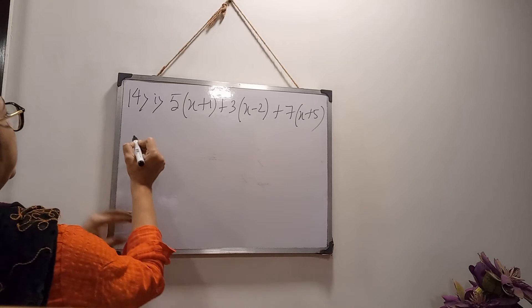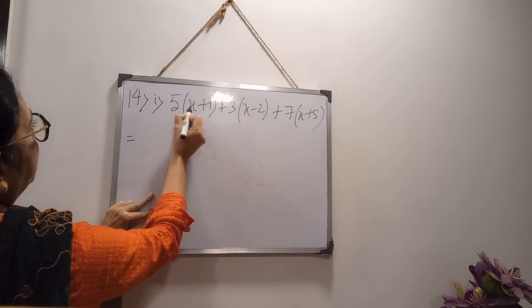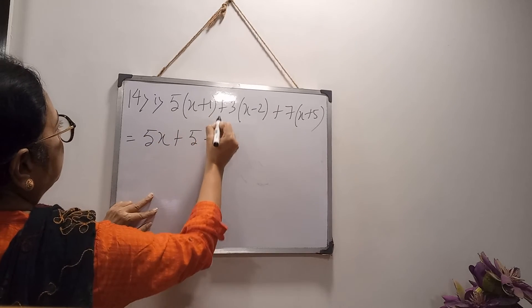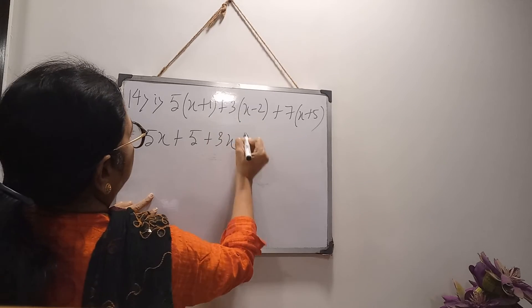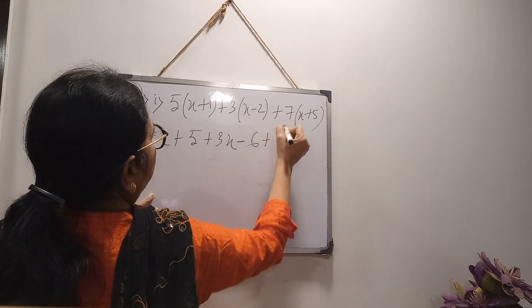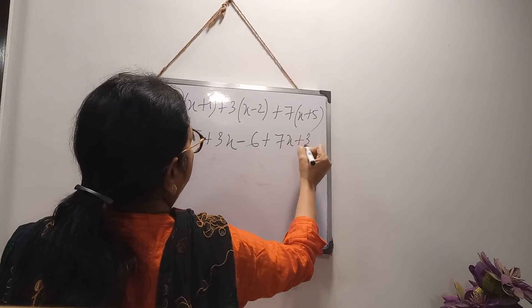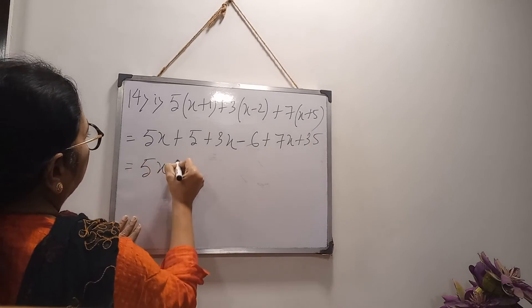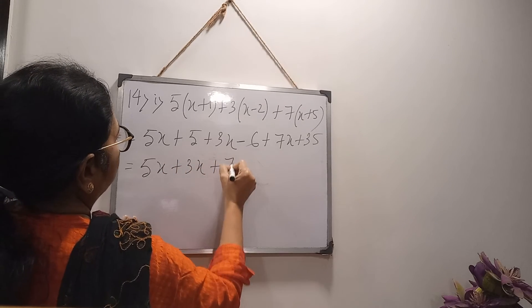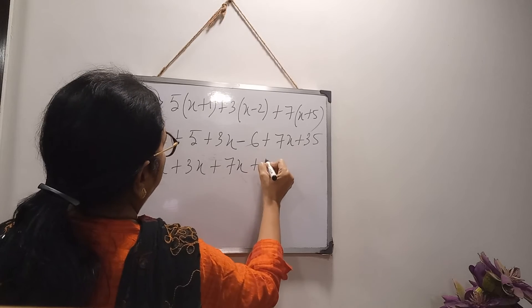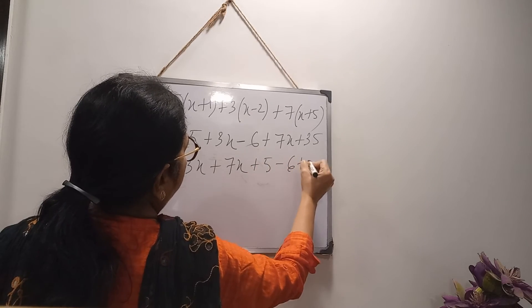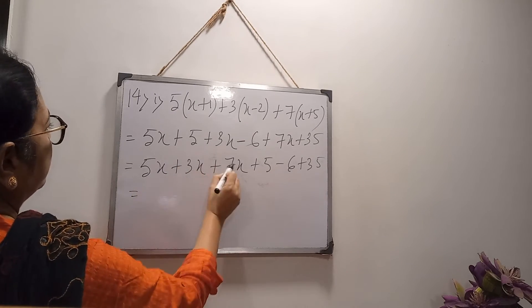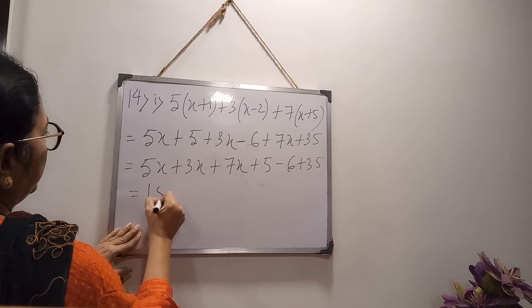There is 5, so 5 into x means 5x, plus 5 ones are 5, plus 3 into x is 3x, plus minus means minus 3 times 2 is 6, plus 7x plus 7 times 5 is 35. Then all the variables write together. So here 5x plus 3x plus 7x. And the numbers also side by side write down, 5 minus 6 plus 35. Then all are positive sign, so we will add 7 plus 3 is 10, 10 plus 5 is 15x.